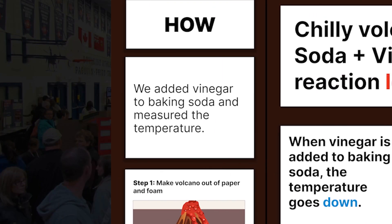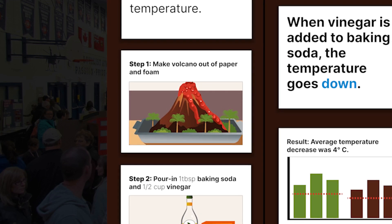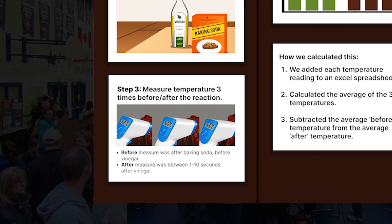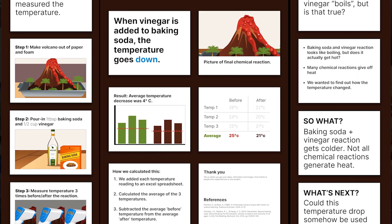For 'How,' how did you do your project? You don't need to list every step, just the important ones. We created a foam volcano, added baking soda and vinegar to it, and measured the temperature before and after the vinegar. If you need to add more detail, include some bullet points that are easy to skim from a distance. You don't have to include every last detail, because judges and visitors can always ask questions and you can give them the information in person.